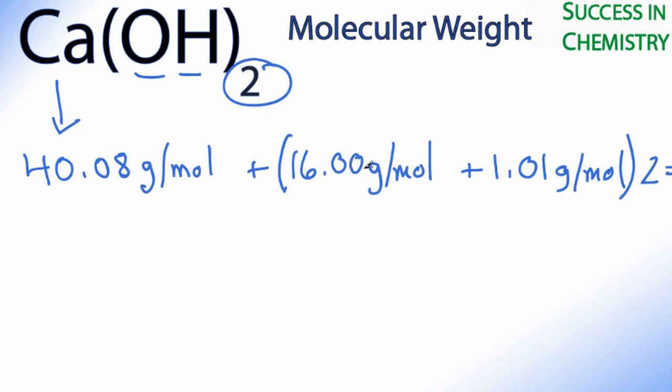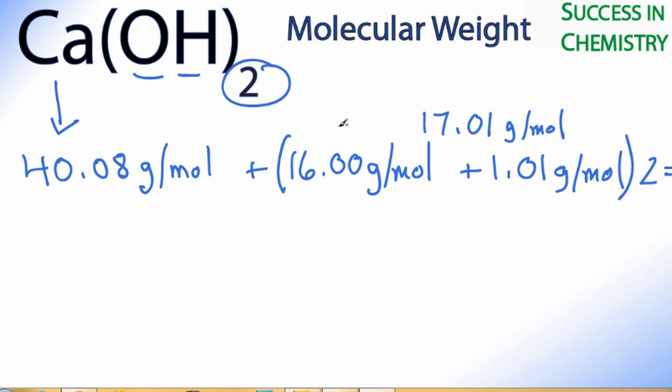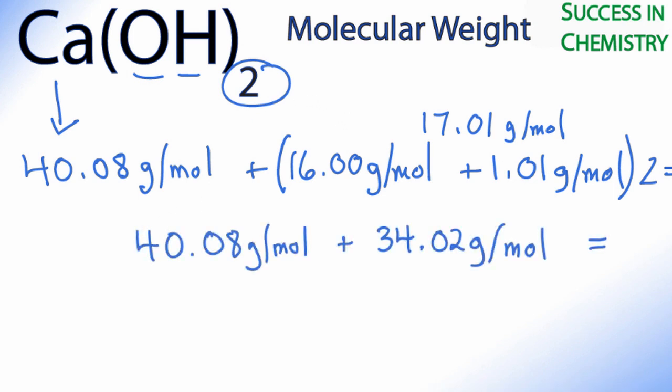So if I add 16.00 plus 1.01, I'll get 17.01. So we'll end up with, and this 34.02 number is because we multiplied 2 times 17.01. We'll add these two numbers up, and we'll end up with a final molar mass of 74.10 grams per mole.